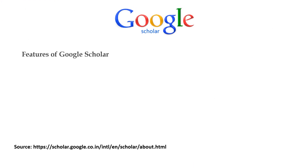Google Scholar provides a simple way to broadly search for scholarly literature. From one place, you can search across many disciplines and sources — articles, theses, books, abstracts, and court opinions — from academic publishers, professional societies, online repositories, universities, and other websites. Google Scholar helps you find relevant work across the world of scholarly research. The following are the features of Google Scholar.